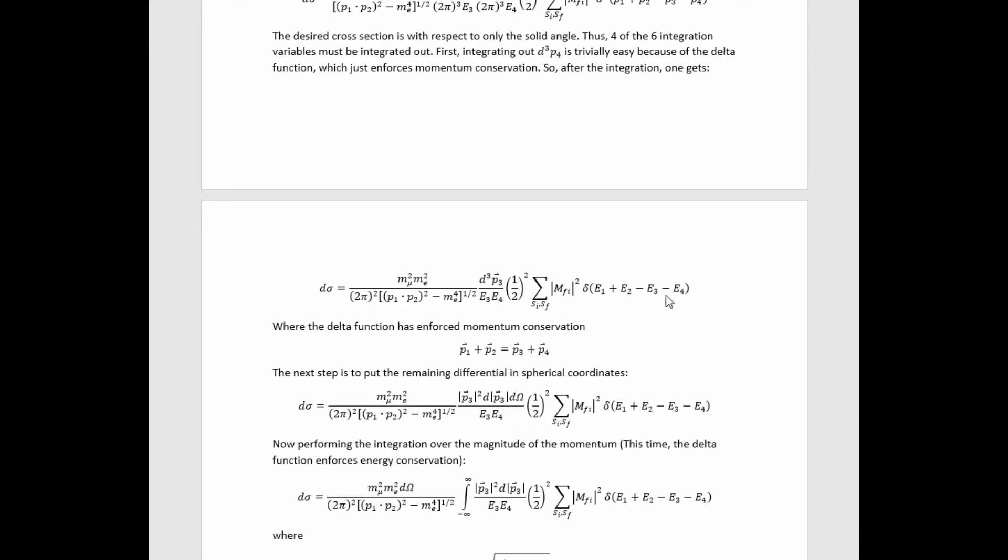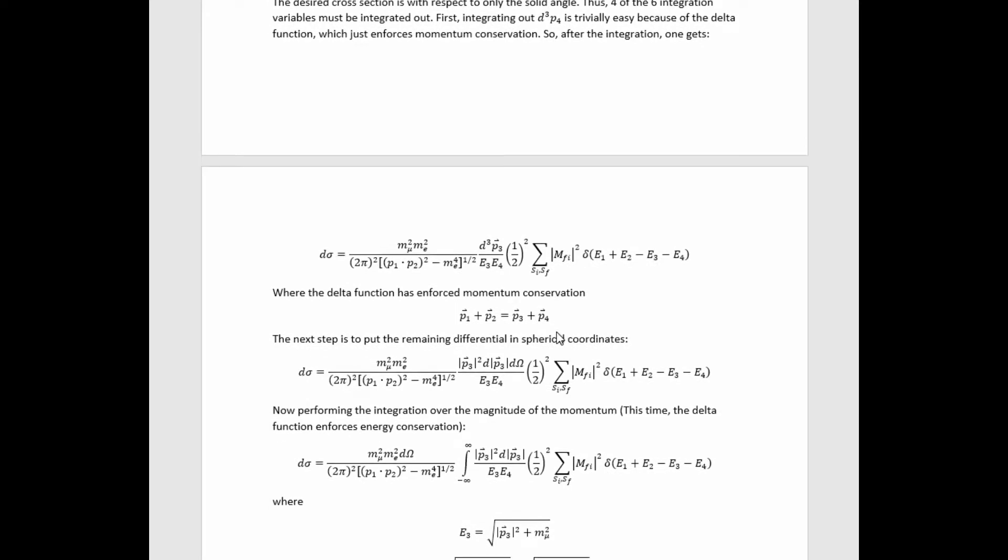Now these energies here are going to be some function of the magnitude of the momentum of the muon here. So what we need to do is then work out what those functions are and transform the delta function.